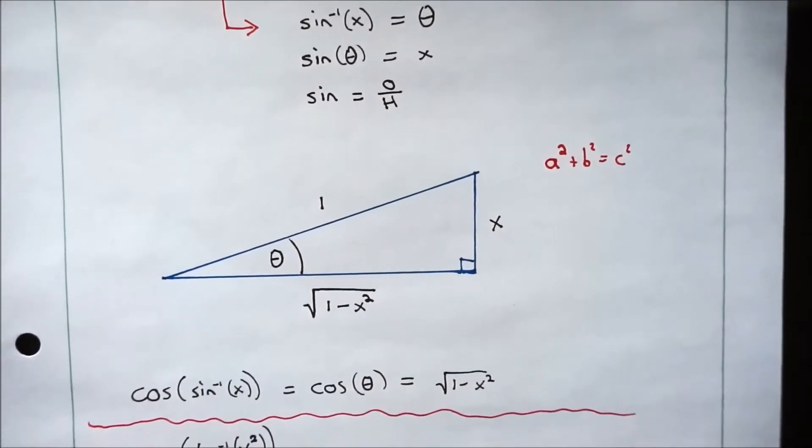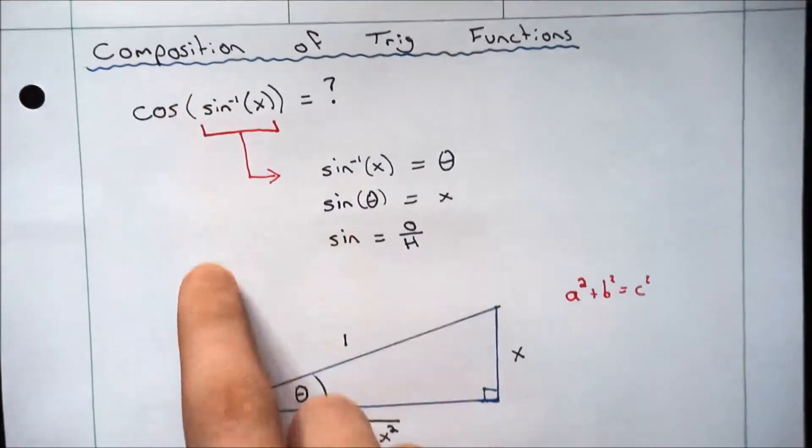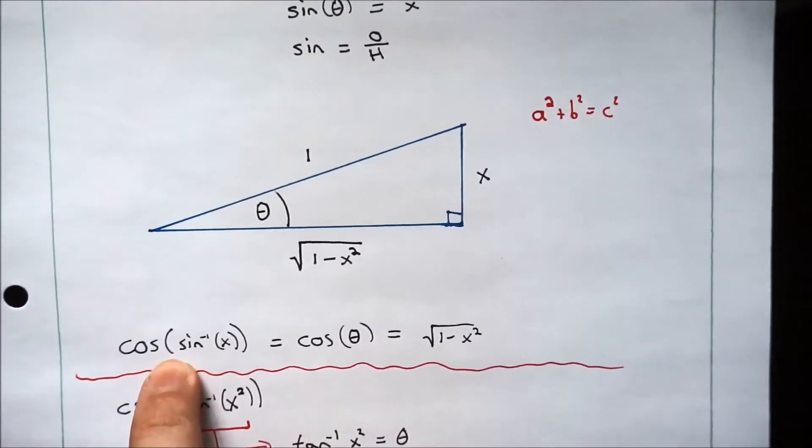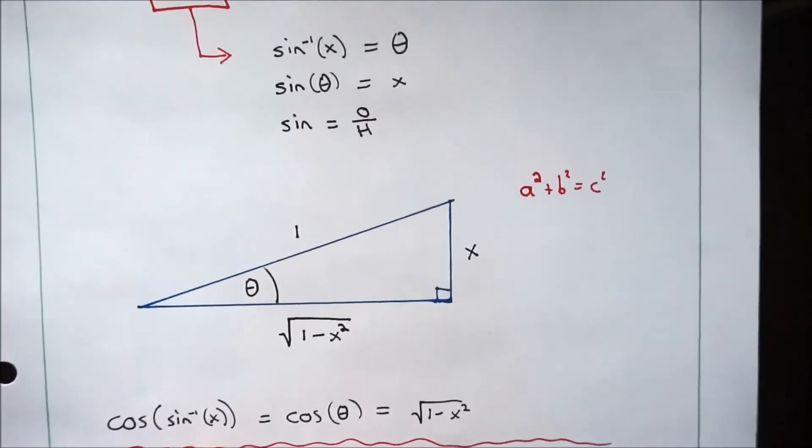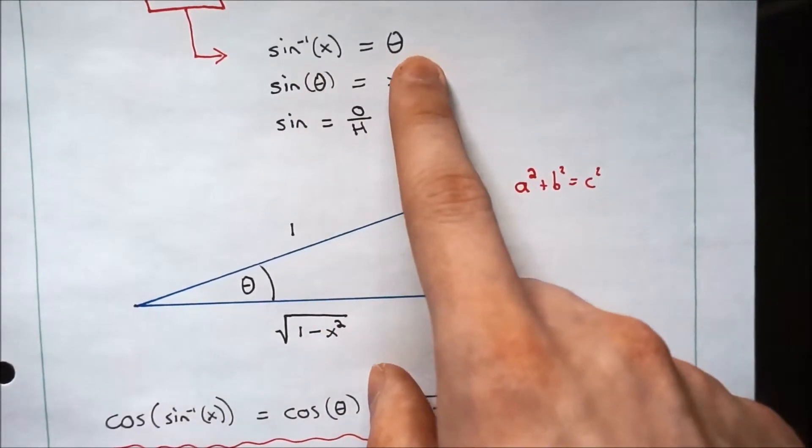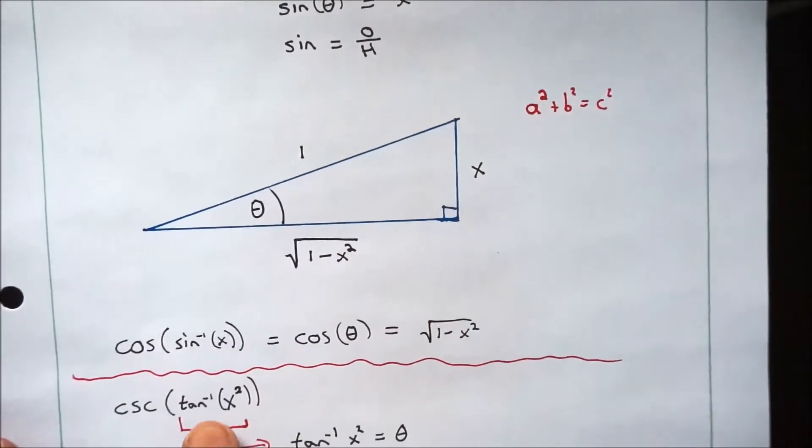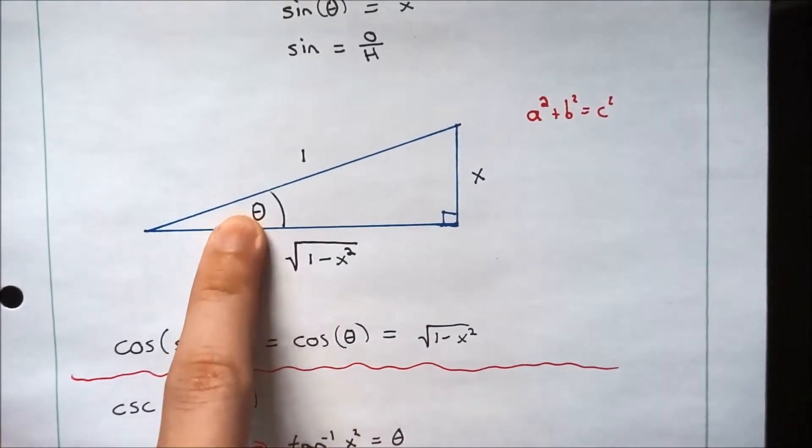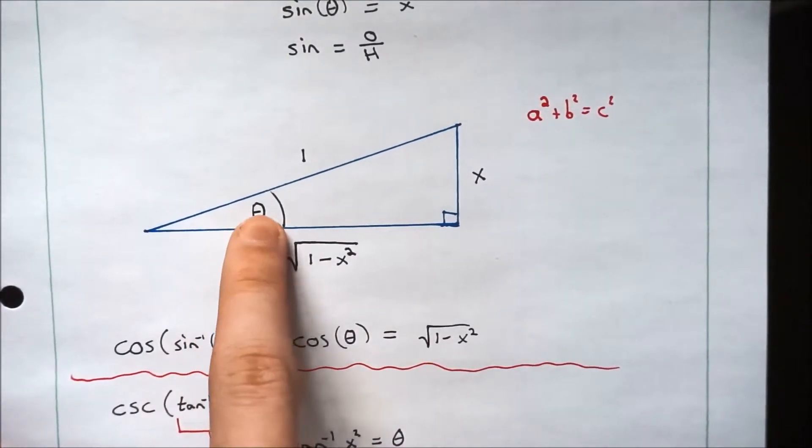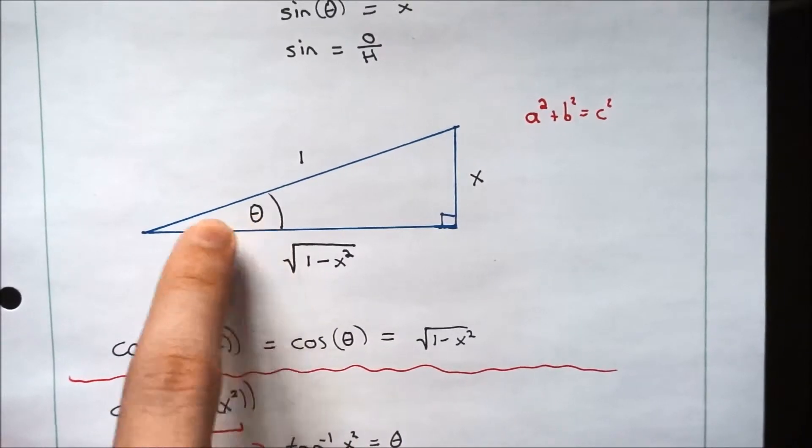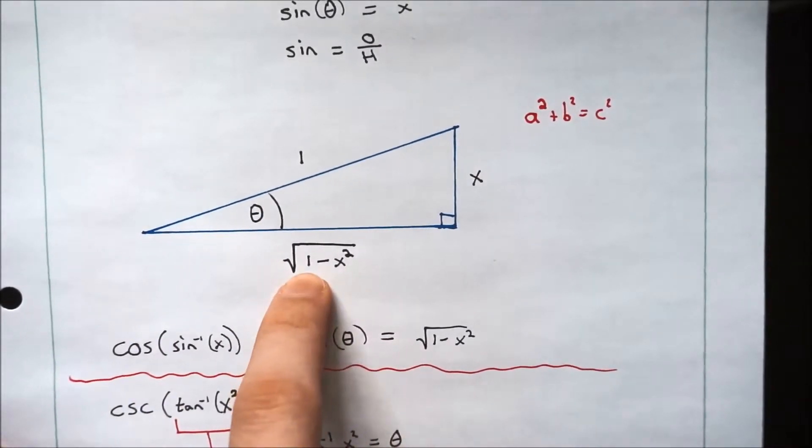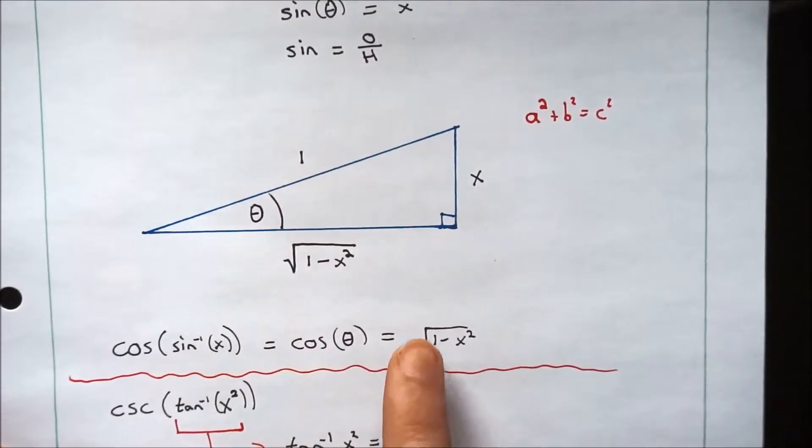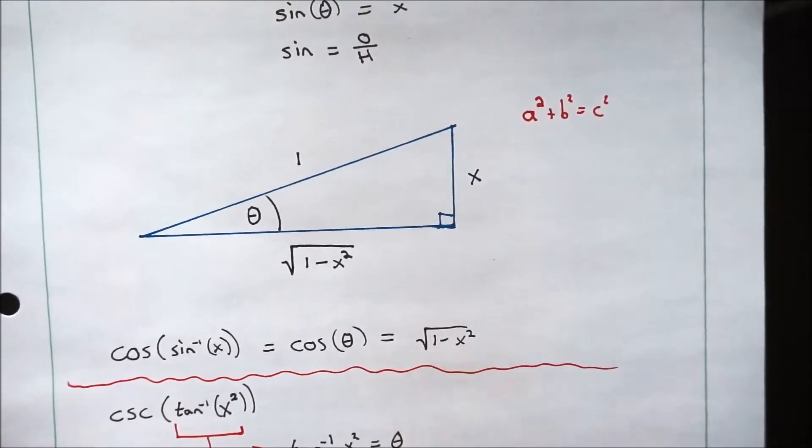Next thing we're going to do is we're just going to take our original equation, just bring it down here. That's cosine of the arc sine of x. Remember, we found that the arc sine of x is just some angle theta. So we're really taking the cosine of theta, which you go back to the triangle to figure out. And cosine is adjacent over hypotenuse. So our adjacent is the square root of 1 minus x squared over the hypotenuse of 1. So there's your answer, square root of 1 minus x squared.